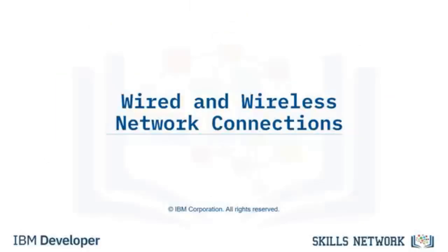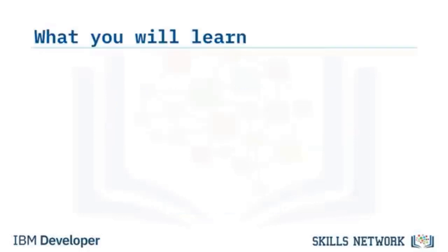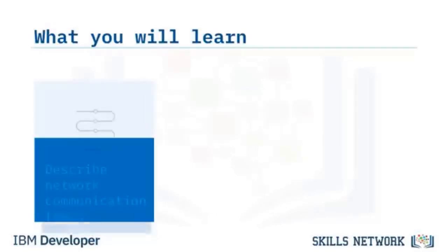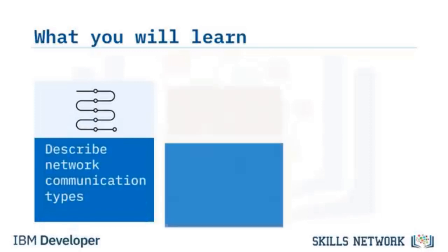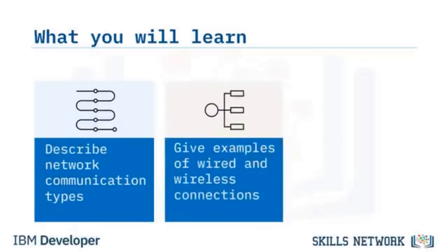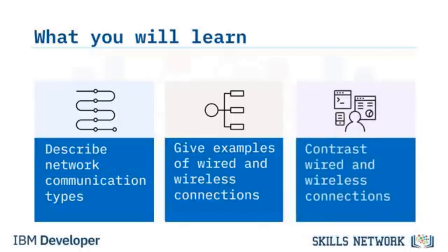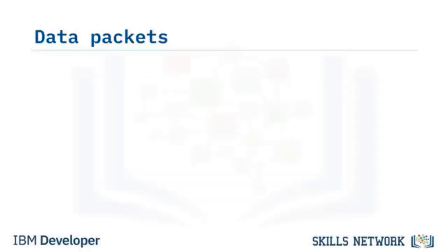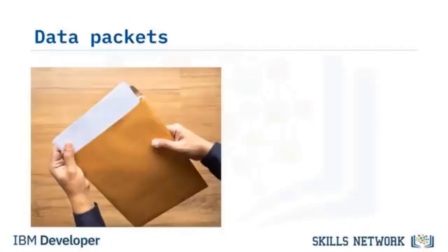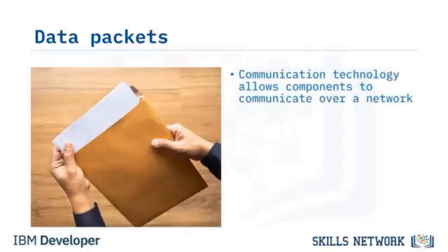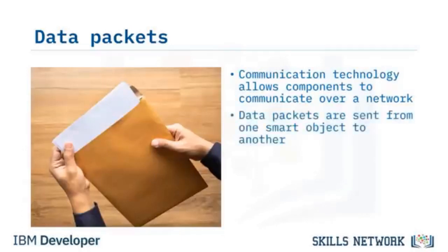Welcome to Wired and Wireless Network Connections. After watching this video, you will be able to describe network communication types, give examples of wired and wireless connections, and contrast wired and wireless connections. Today, hardly any device operates in isolation. Communication technology allows components to communicate over a network by converting information into data packets that are sent from one smart object to another in dialogue.